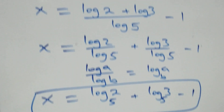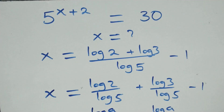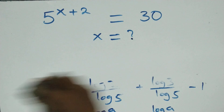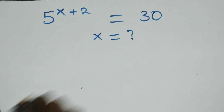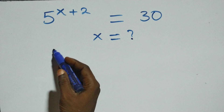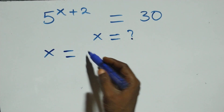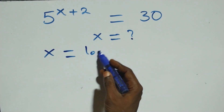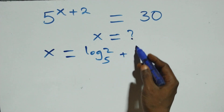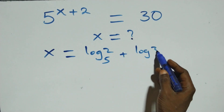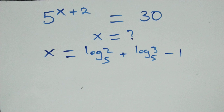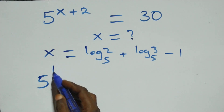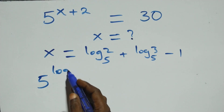Then let's check here if this satisfies the given problem. We have the value of x equals to log 2 over log 5 plus log 3 over log 5 minus 1. So x equals to log 2 over log 5 plus log 3 over log 5 minus 1.